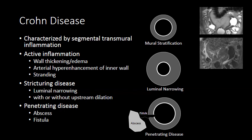Stricturing disease tends to be a more chronic form of Crohn's disease in which luminal narrowing and fibrosis result in upstream dilation or even obstruction of the bowel. There can be superimposed active inflammation, but in chronic stricturing disease, even after medical treatment to reduce the Crohn's flare, obstructive symptoms persist and stricturing disease tends to be managed surgically.